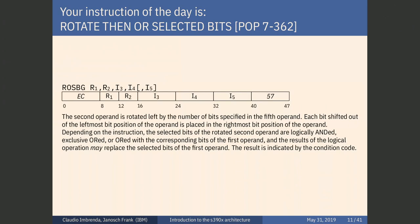Rotate Then OR Selected Bits: you take the second register, rotate it by the number specified in an immediate value, then consider only the bits from position I3 up to I4 — not the whole register. You perform an OR of those bits, and the result may replace the selected bits of the first operand. The highest bit indicates whether you want to perform the operation just to check the condition code, or actually write the results back to the register.